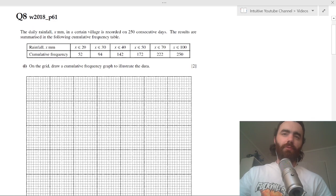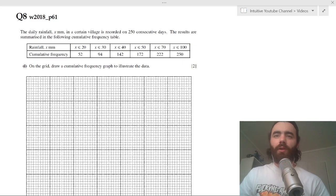Okay, so let's do an example. We have a table here with rainfall in x millimeters and cumulative frequency as well. It's for the rainfall in a certain village over 250 consecutive days.